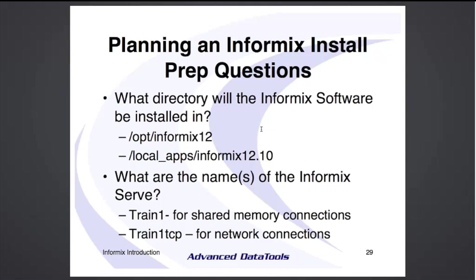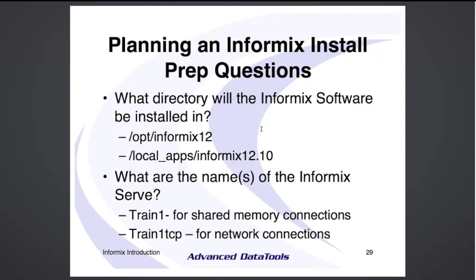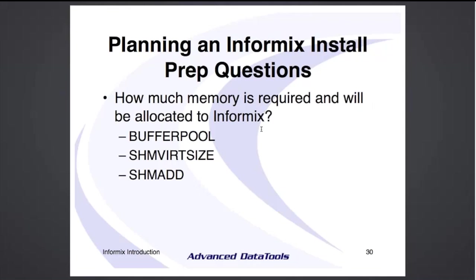The second thing is you need names for your Informix server — very important because that's what people use to connect. I try to find meaningful names like application names. I'm using Train1 and Train1TCP: Train1 is for the shared memory connections, Train1TCP is for the network connections. Then you need to decide how much memory to allocate. Three key variables: buffer pool, shared memory virtual size, and shared memory add.